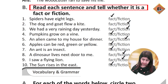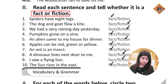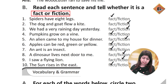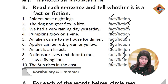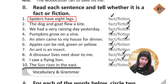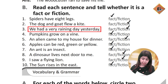Now we have a few sentences. We have told them what fiction is and what fact is. Fact is what we consider the truth, and fiction is the product of imagination. Spiders have eight legs — Fact. The dog and goat flew a kite — Fiction.